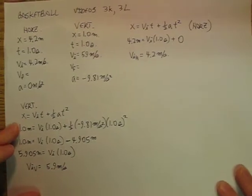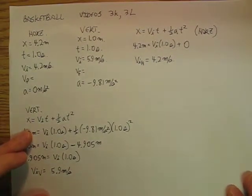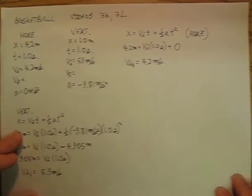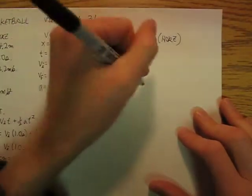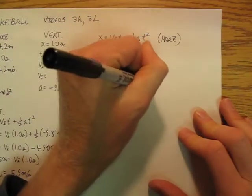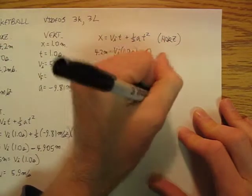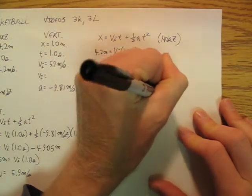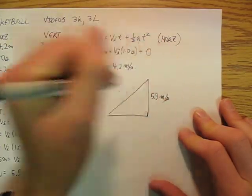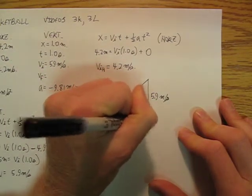So now that allows us to calculate an initial speed and initial velocity, we'll call it. So again, we'll go 5.90 meters per second and 4.90 meters per second.